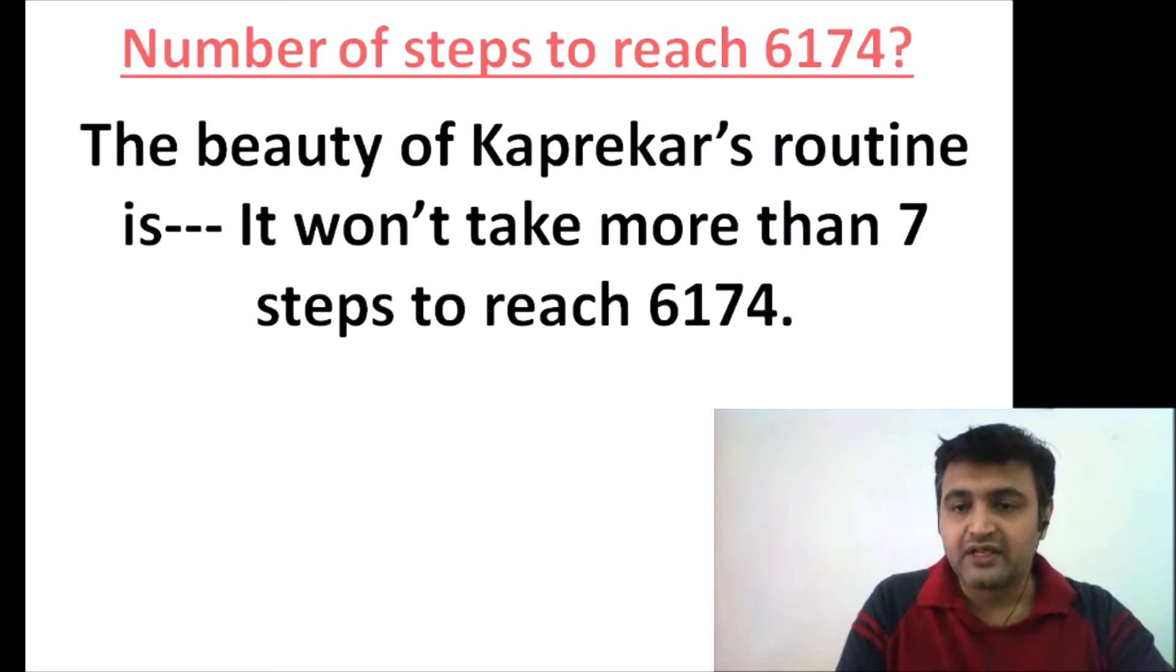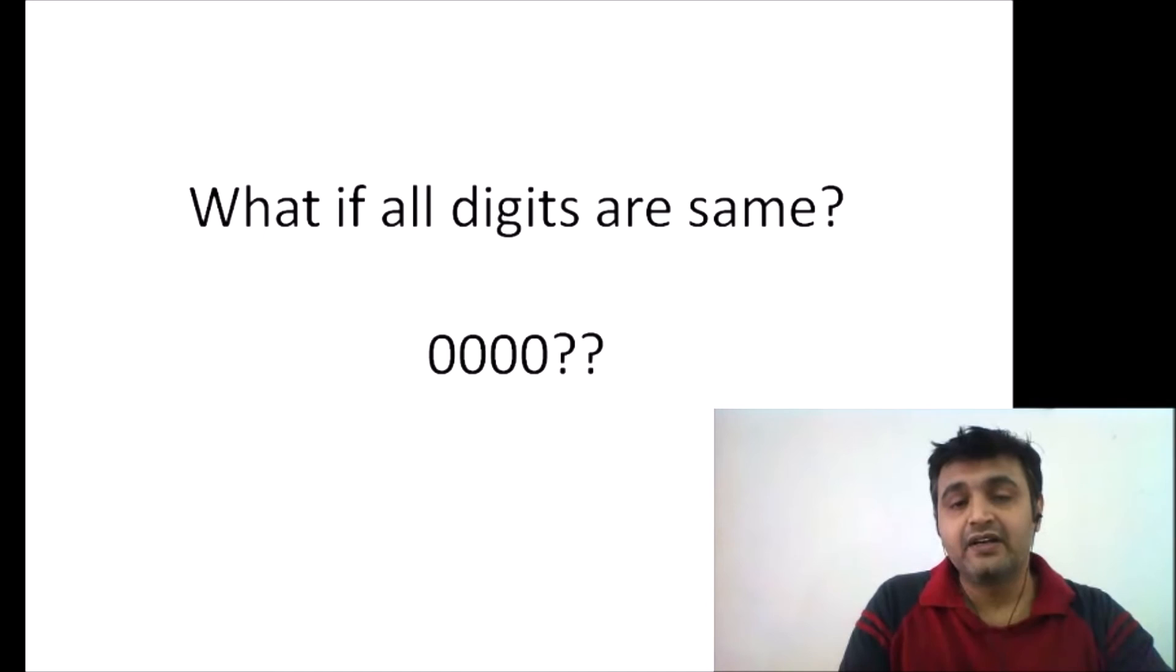I also said you should not take all digits the same. Why? If you take 2222, arrange in ascending and descending order, you get 2222 both times. When you subtract, you get 0000. That's why all digits being the same won't help you reach 6174. At least one should be different.